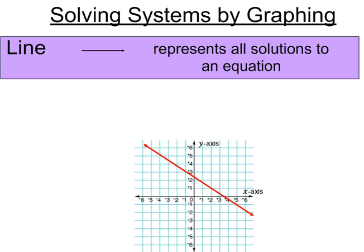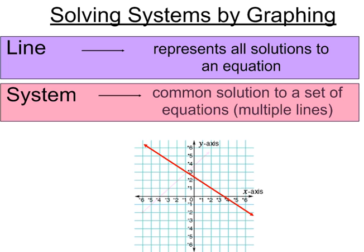Now when we're dealing with a system, we're basically talking about more than one line. So with a system we're looking for the common solution to a set of equations, or multiple lines. As we look at this diagram here, we can see that they collide right here in this spot, and this spot represents negative one, positive three. That would be the common solution, or the solution to the system where the lines collide.